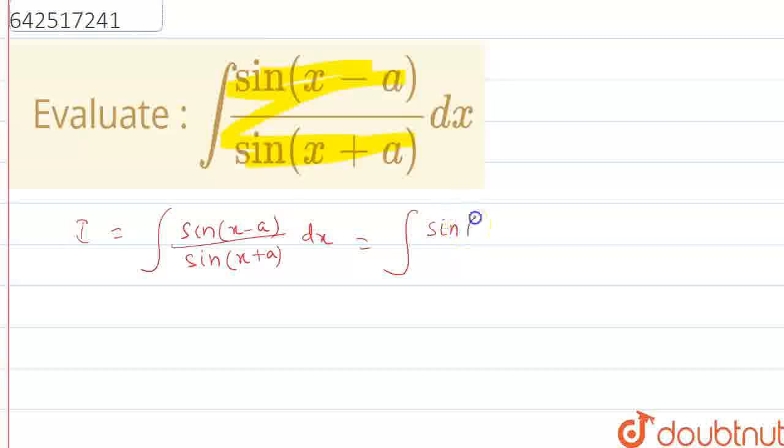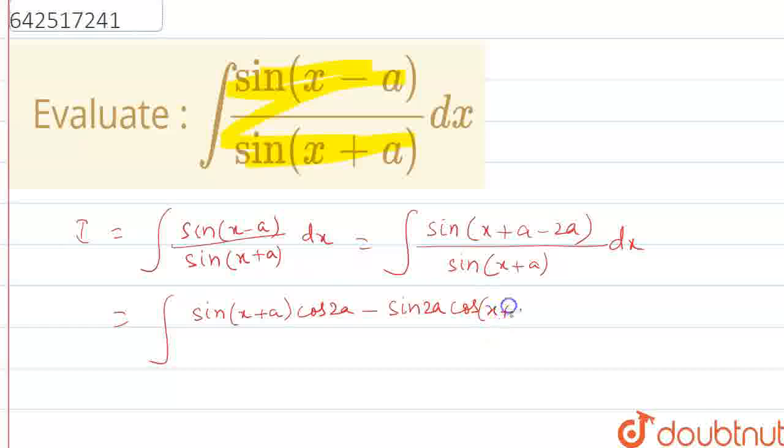So, we can write x minus a as (x + a - 2a) by sin(x + a) dx. Now we can write sin(x + a)cos(2a) minus sin(2a)cos(x + a) whole divided by sin(x + a).